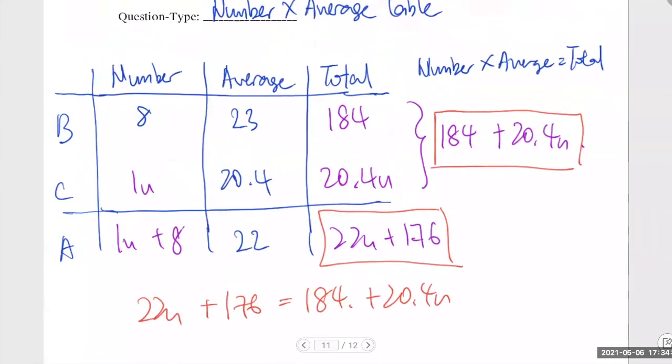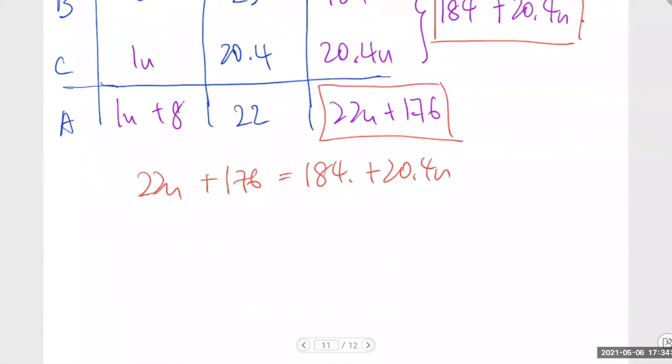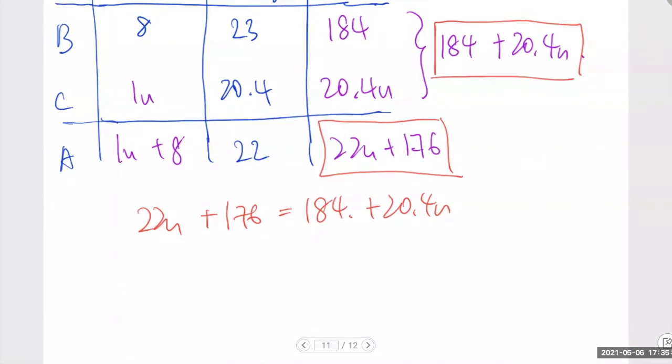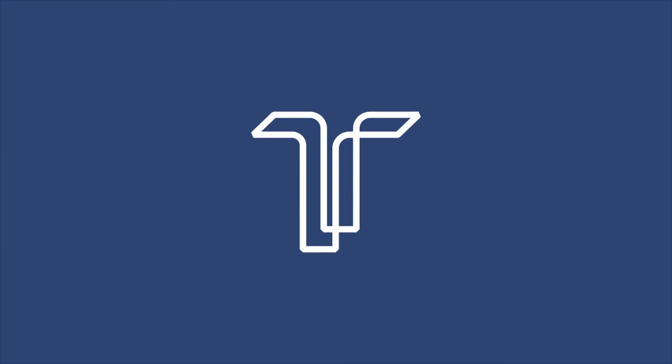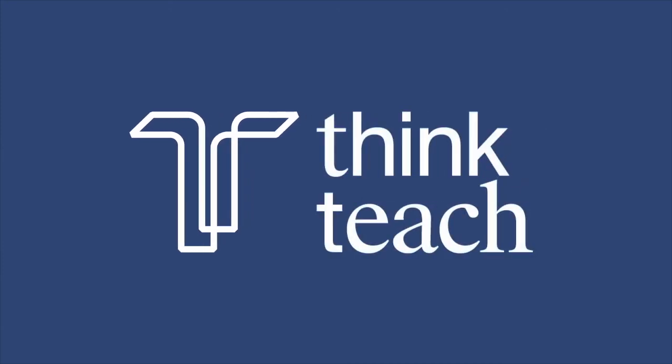Now, Lokeh, last question before we move on to the earlier part. You know that 1.4, 1.6U is equal to 8. So, 1U equals to 5. Good. So, let's go.